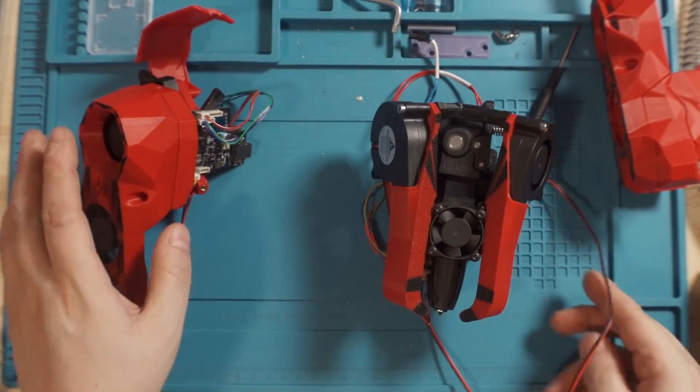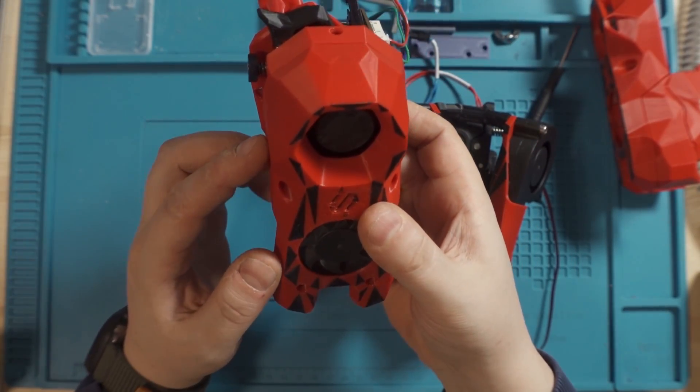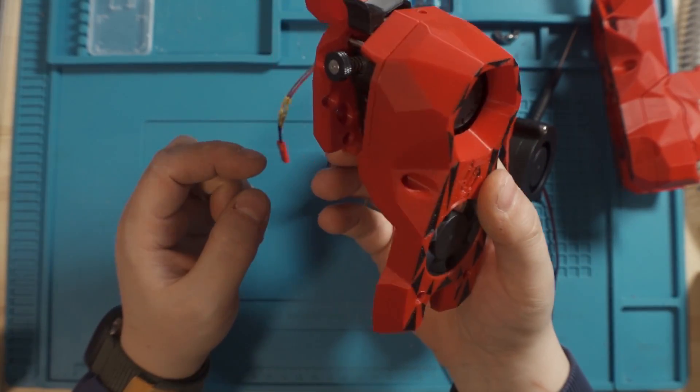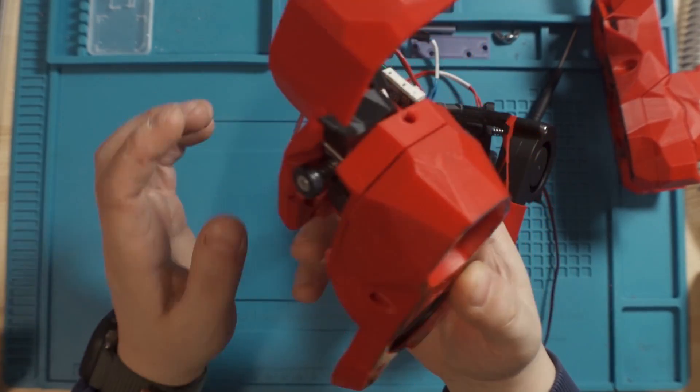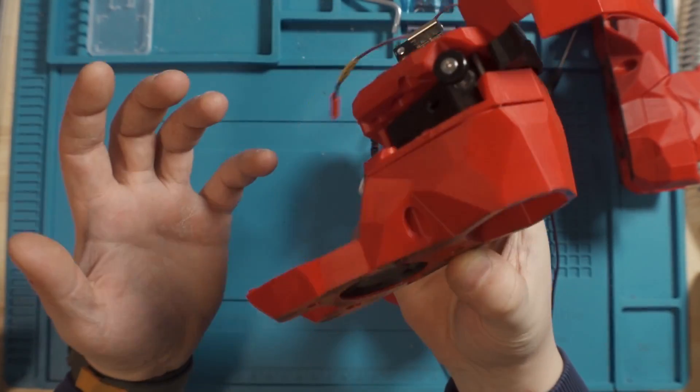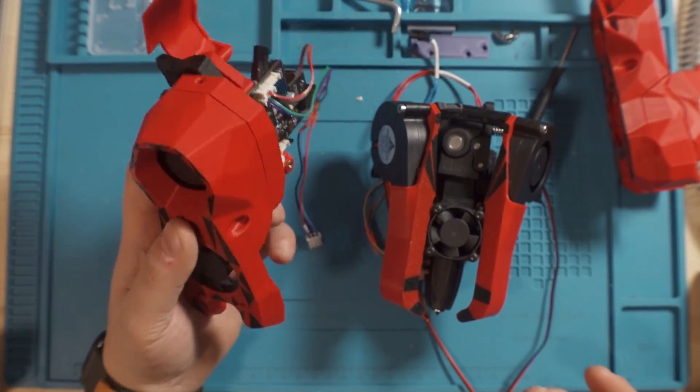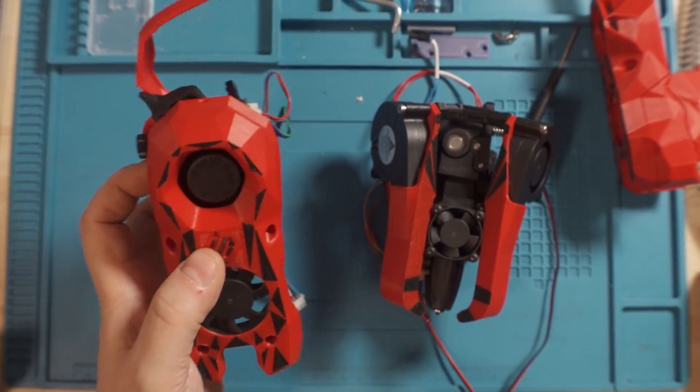So we can start doing some test prints with that. But the best speed that we could get from the Stealth Burner was around 275 millimeters per second. Which is okay for a regular printer. But we're making as I mentioned a beast. So that's not good enough for us. For a regular user I think that's more than enough.